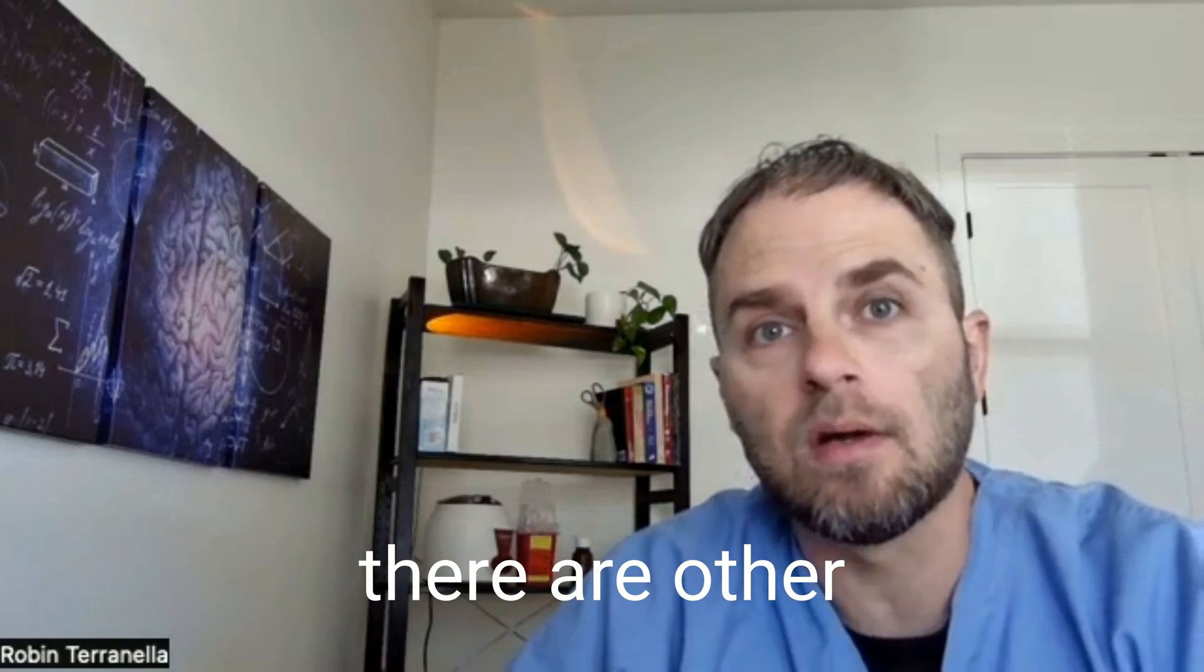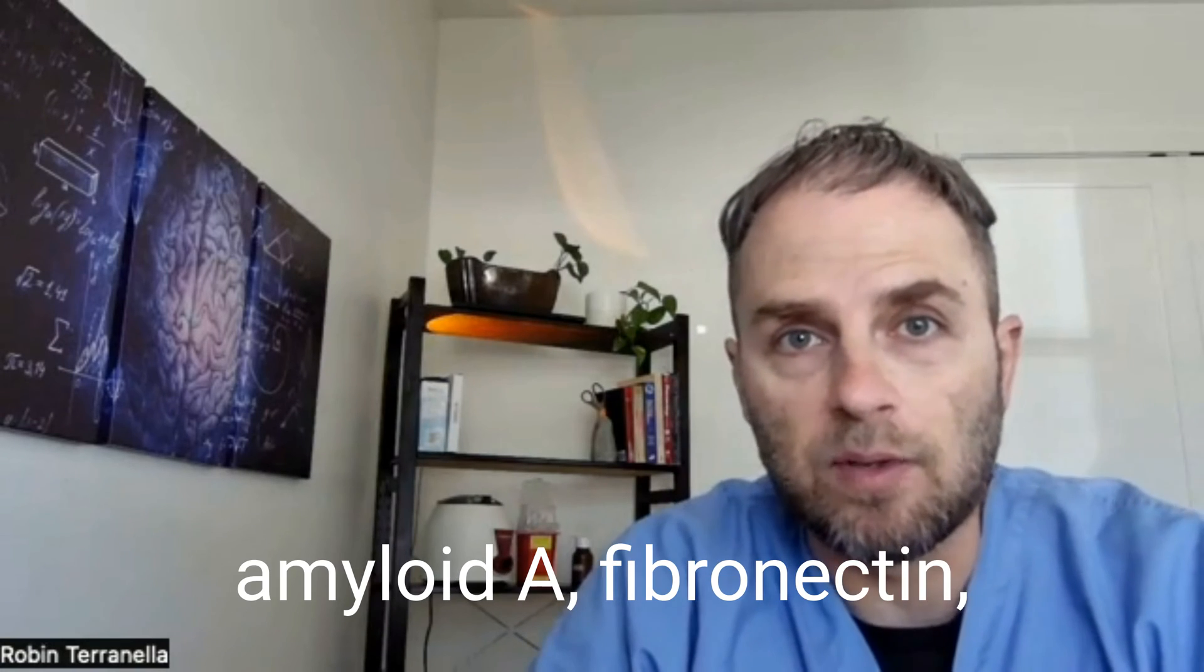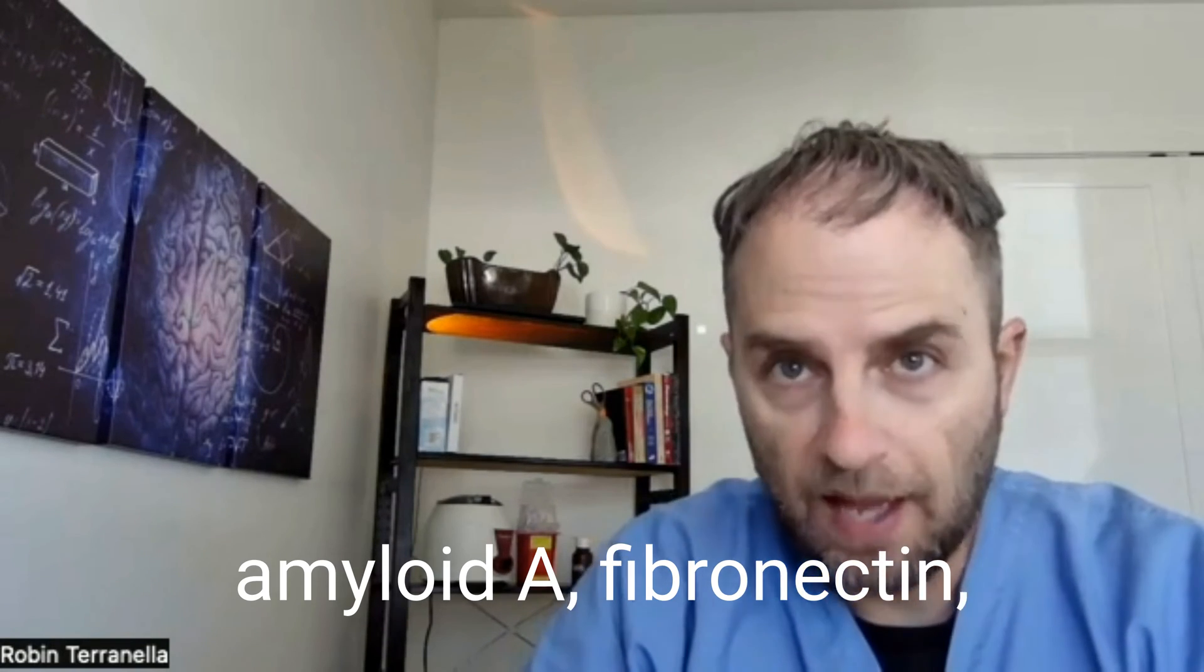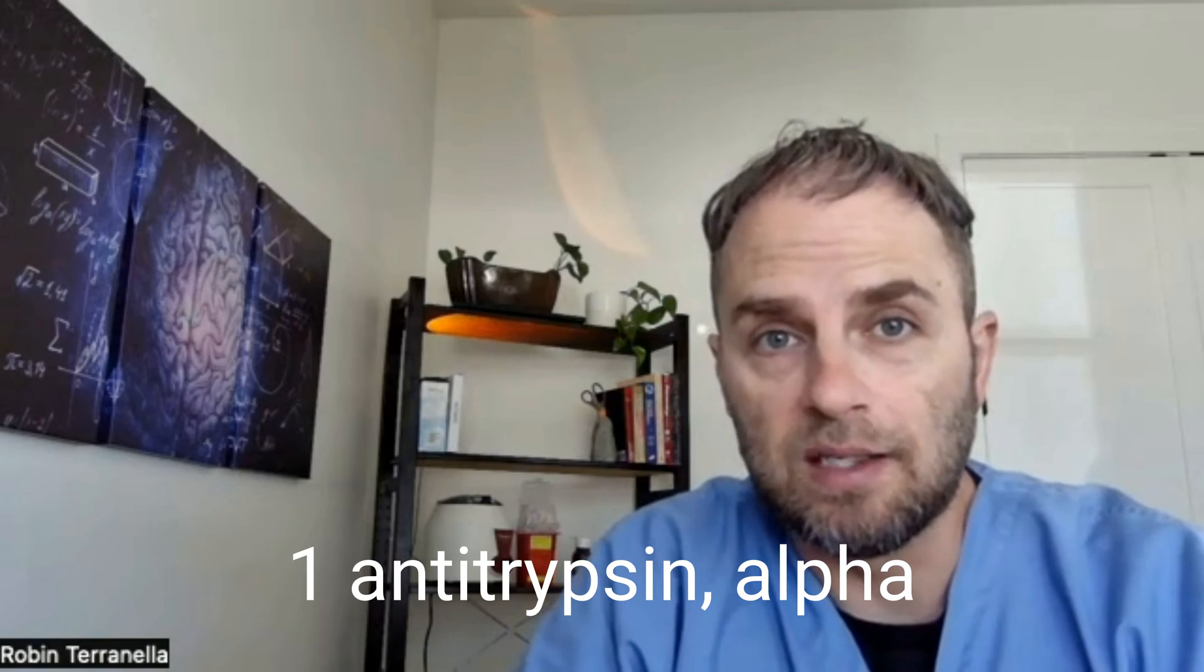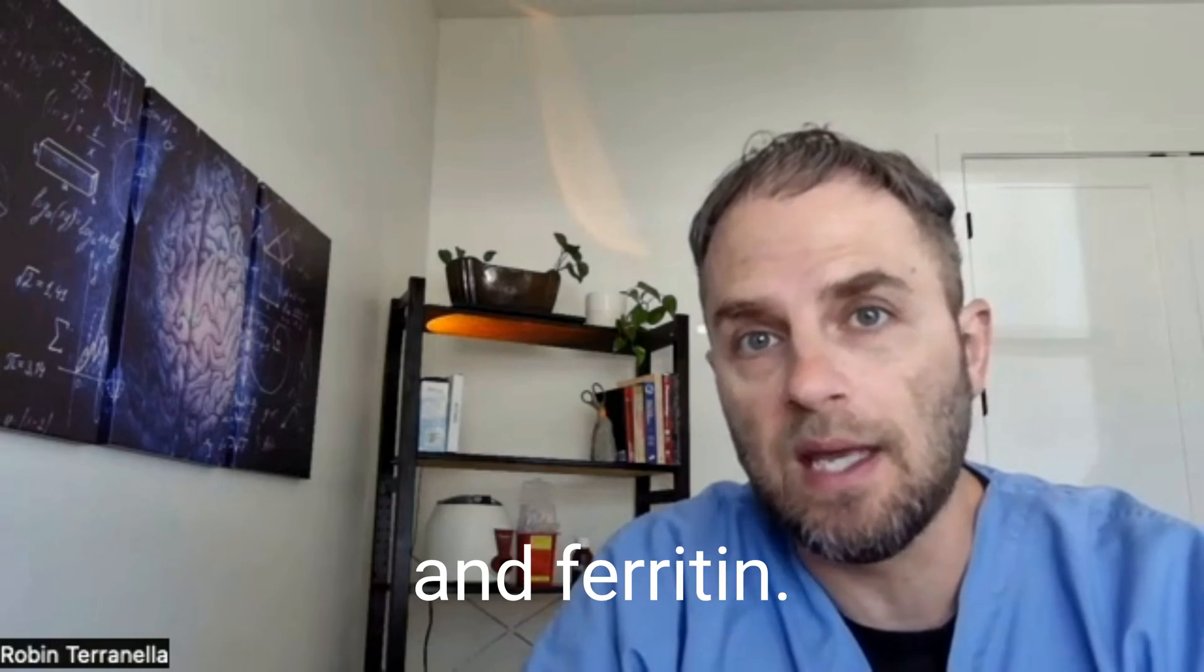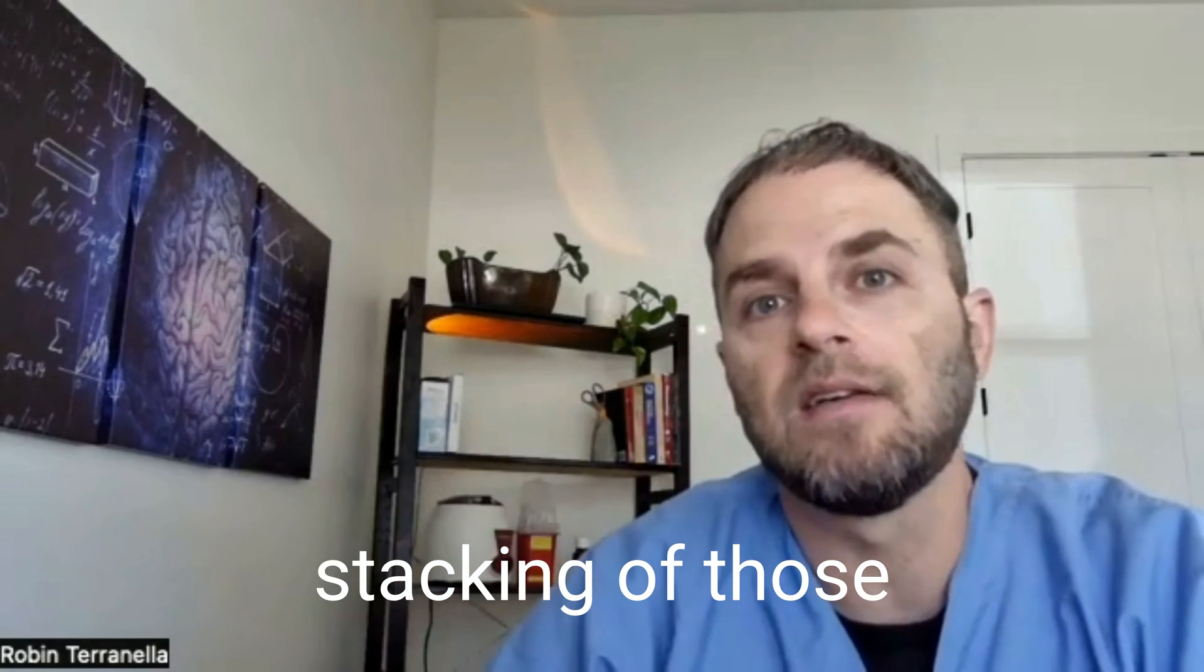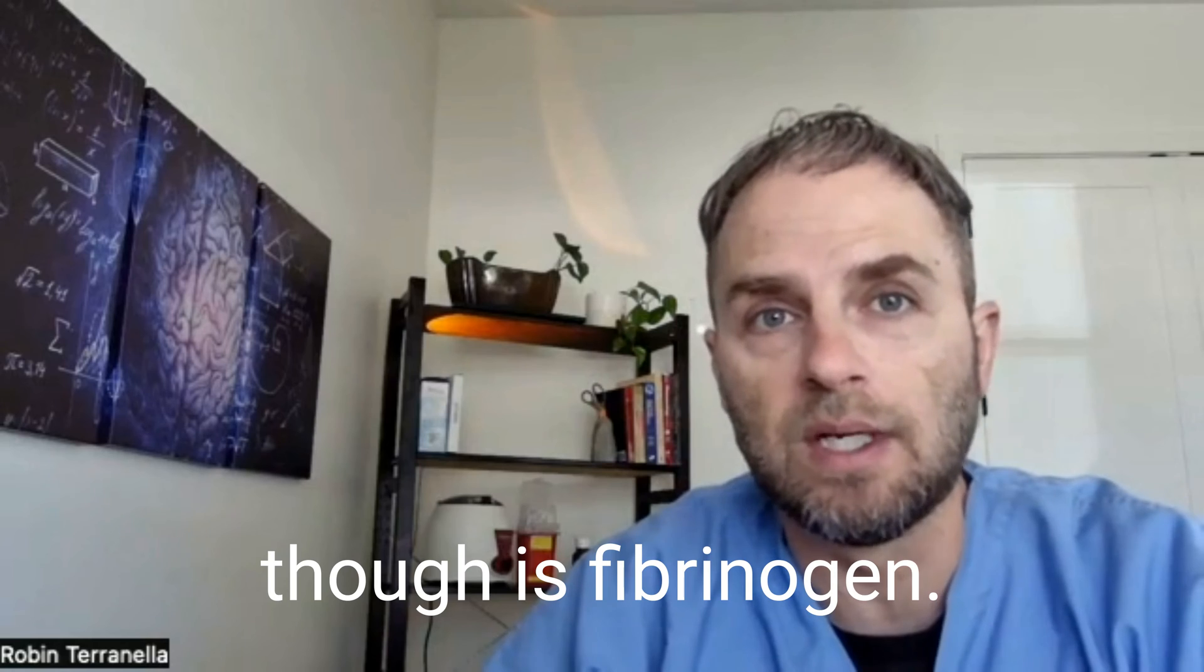Outside of fibrinogen, there are other examples of these proteins and includes things like serum amyloid A, fibronectin, haptoglobin, alpha-1-antitrypsin, alpha-2-macroglobulin, ceruloplasmin, and ferritin. The main one affecting the clumping or stacking of those red blood cells, though, is fibrinogen.